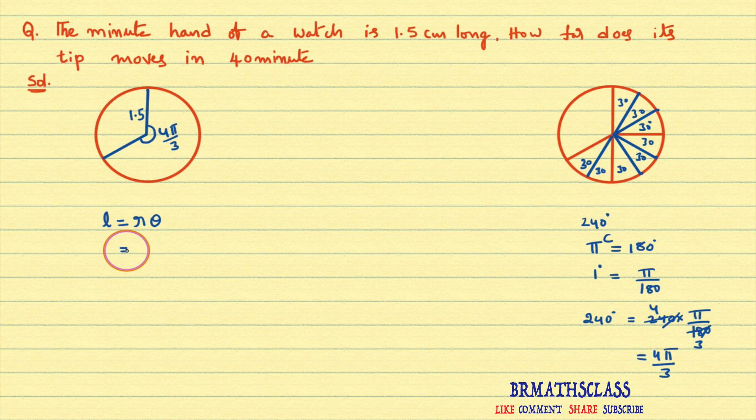So here we need to find how far does the tip move. That means you need to find length of an arc. That means you need to calculate L. What is r here? R is 1.5. 1.5 into theta.